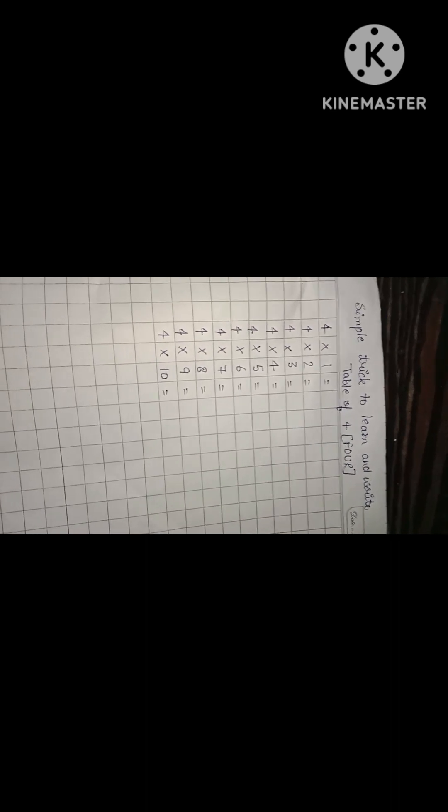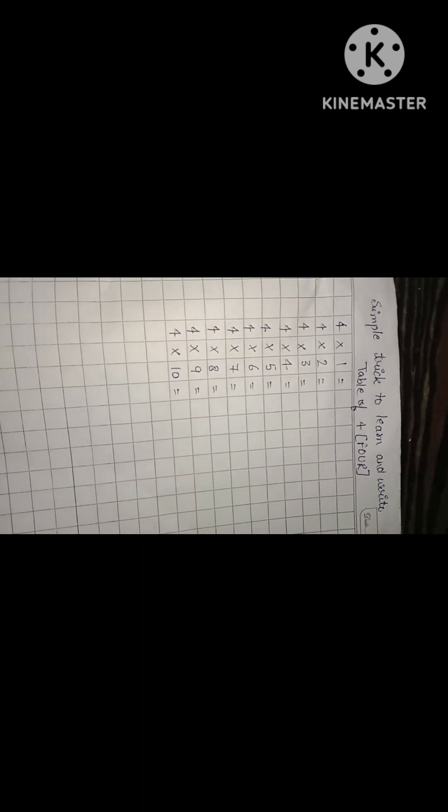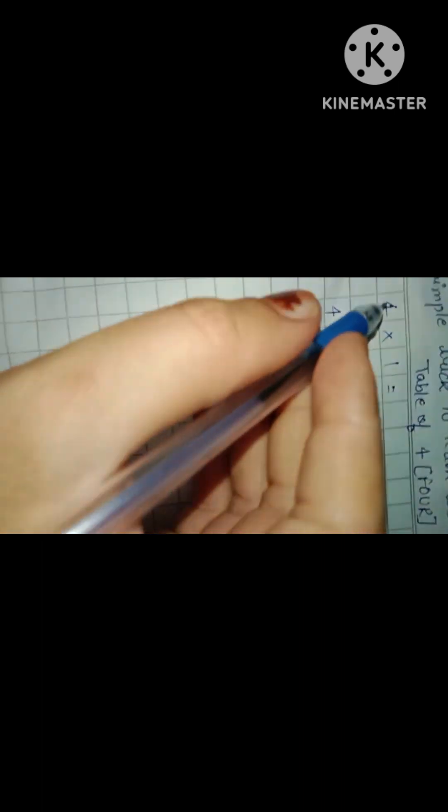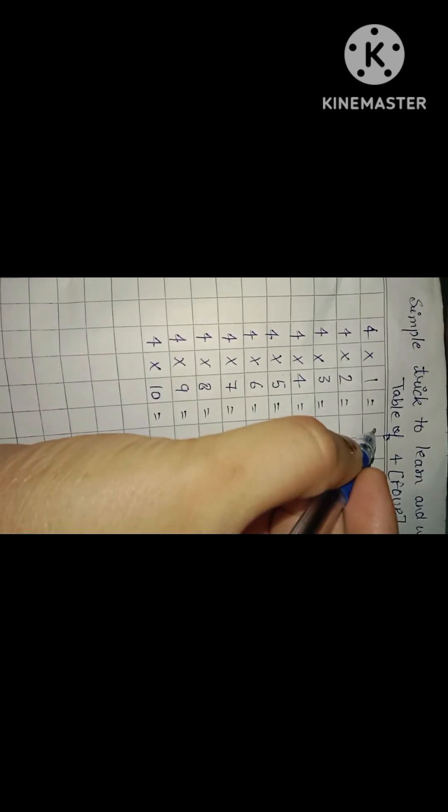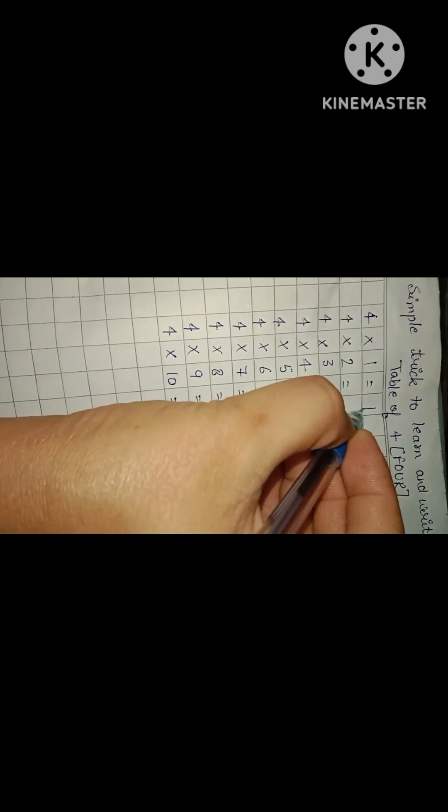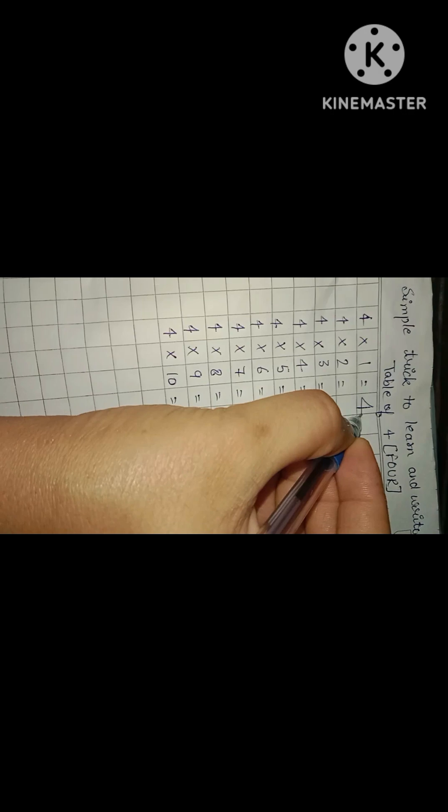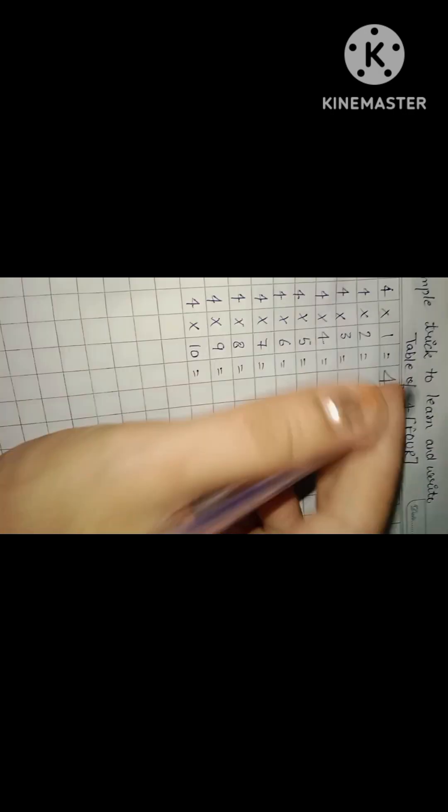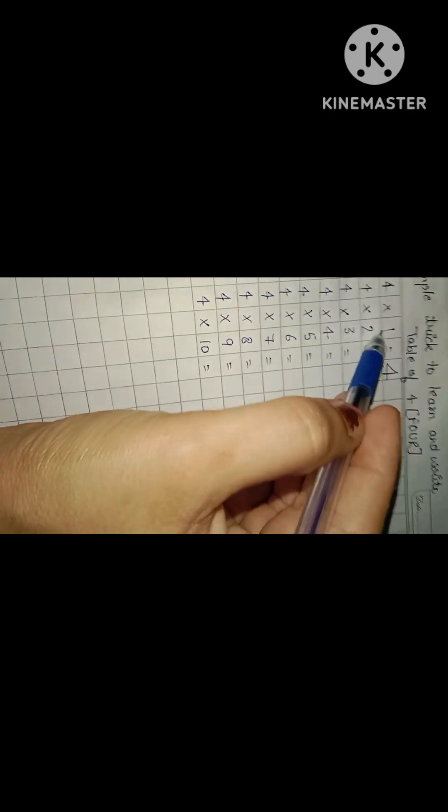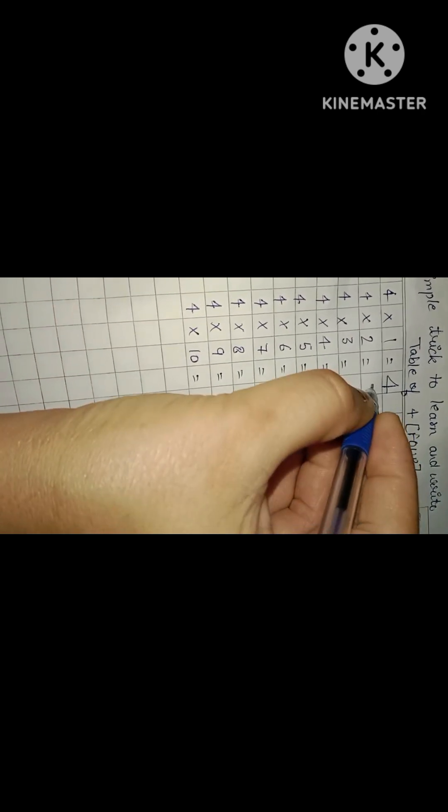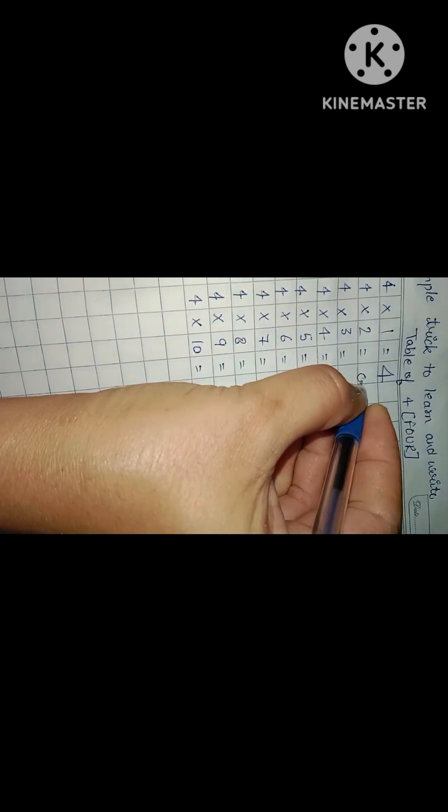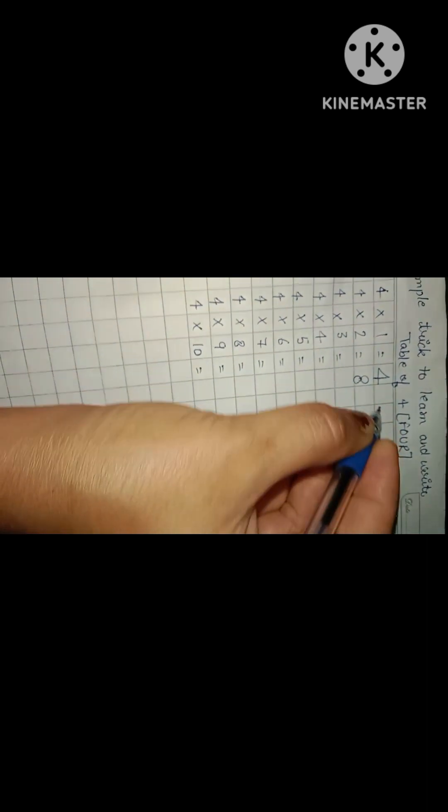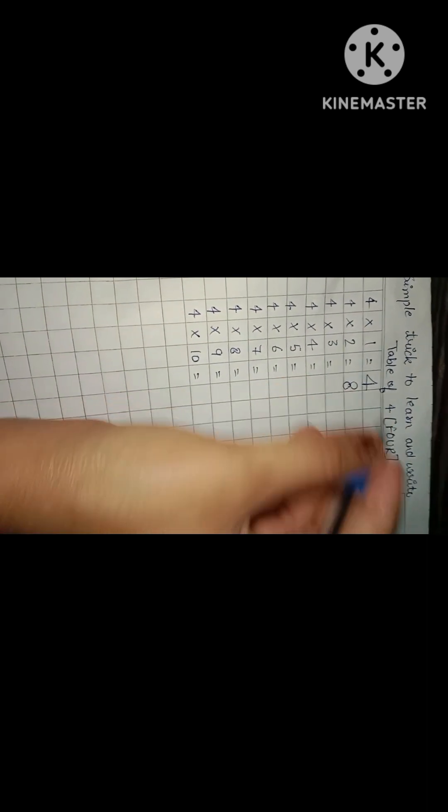As we know, 4 times 1 is 4. 4 times 2 is 8, then I will write 8.